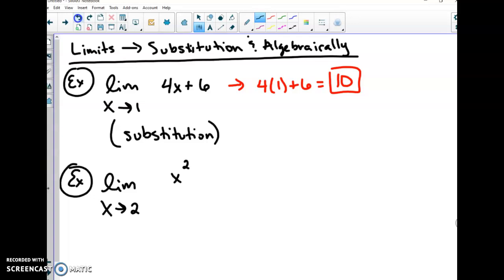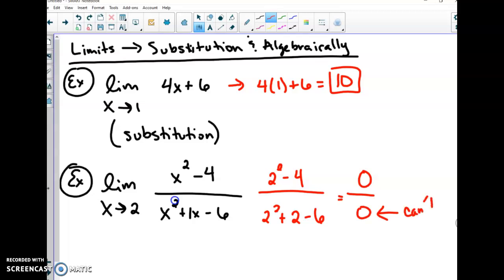I have x squared minus 4 over x squared plus 1x minus 6. If I were to sub in that 2 right away, I'd have 2 squared minus 4 divided by 2 squared plus 2 minus 6. This ends up being 0 over 0, and we all know that this cannot happen. So limit substitution actually doesn't work for this. We have to do some things first.